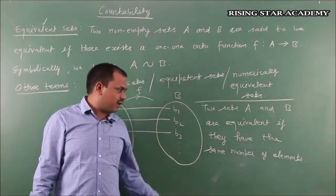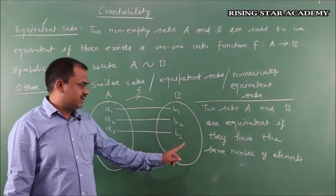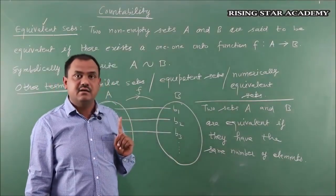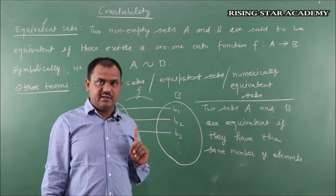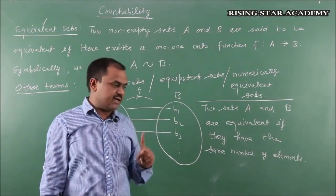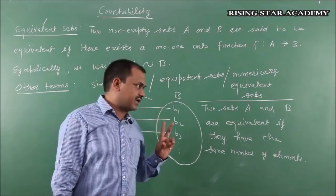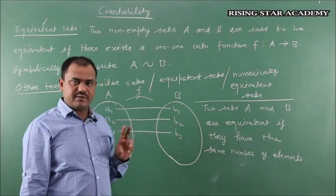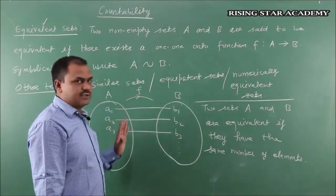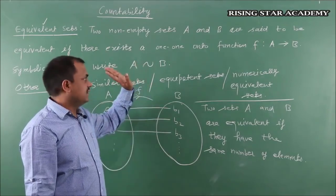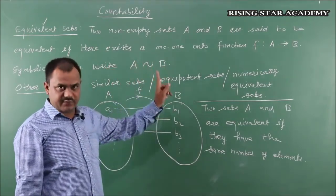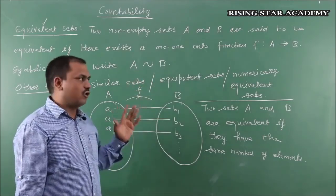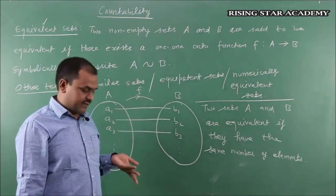So roughly speaking, in an ordinary sense, I can say two sets are equivalent if and only if they have the same number of elements — because for every element of A there is an element in B and for every element of B there is an element in A. This definition holds for both finite and infinite sets, as we will see many infinite sets shown to be equivalent in our course. This was the simple definition — there must exist a one-one onto function f from A to B, then A is equivalent to B.